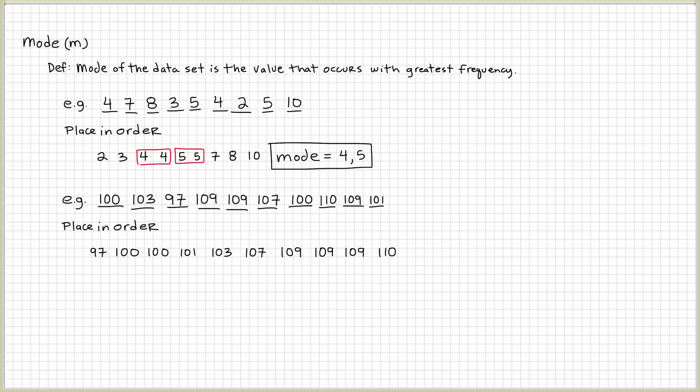And what we can do is we can put it in a frequency table. So, we have our values: 97, 100, 101, 103, 107, 109, and 110. And the counts...